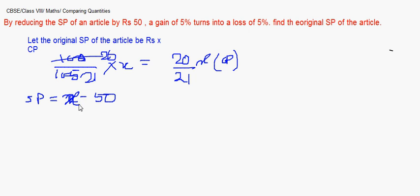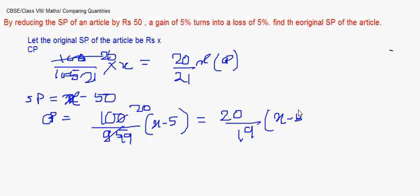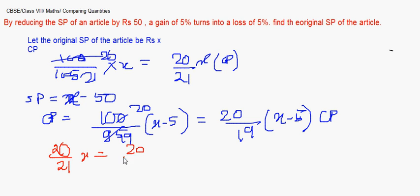With the reduced selling price (x − 50) and a loss of 5%, the cost price is 100/95 × (x − 50), which simplifies to 20(x − 50)/19. Since the cost price of the same article must be equal in both cases, we equate: 20x/21 = 20(x − 50)/19.